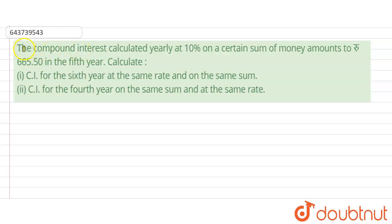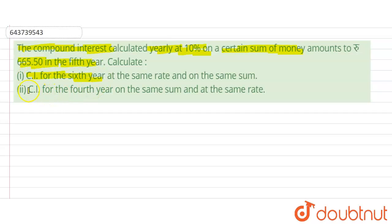Hello students. In this problem we have given the compound interest calculated yearly at 10% on a certain sum of money which amounts to 665.50 in the fifth year. Then we have to calculate the compound interest for the sixth year and the compound interest for the fourth year at the same rate and the same sum.